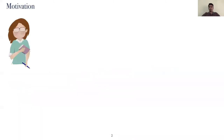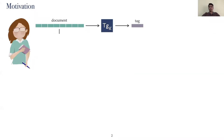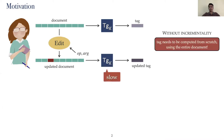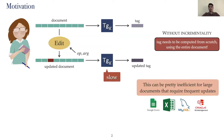Consider a party that wants to compute a cryptographic function, say for message authentication, on a large document. It does so by applying the function to the document and generating the tag. This in general could be slow for large documents. Suppose the party now needs to edit the document in order to update it. If we use the function to generate the tag for the updated document from scratch, it would be slow and inefficient. This is problematic in today's age of big data, where one often deals with large documents that require real-time and frequent updates.